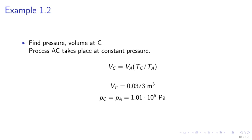And we find the pressure and volume at C. Process AC takes place at constant pressure. VC equals VA times TC over TA. We obtain VC equals 0.0373 meters cubed. And PC equals PA equals 1.01 times 10 to the 5th Pascal.